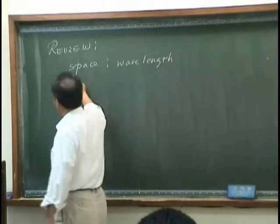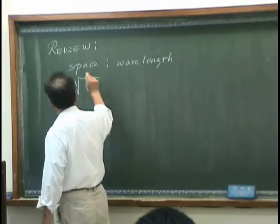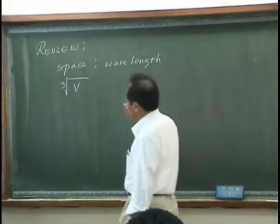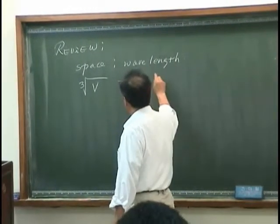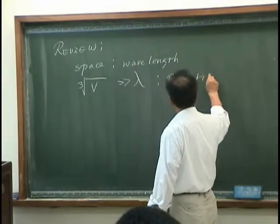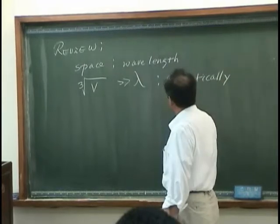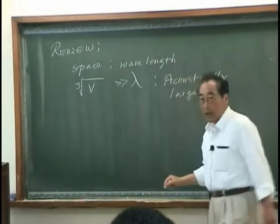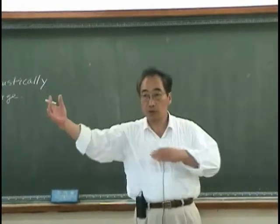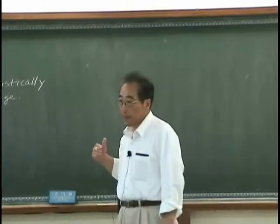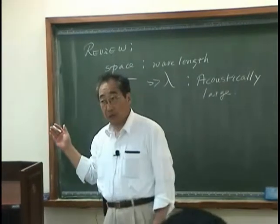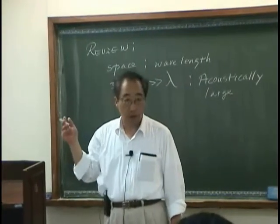For example, when we have certain space that has the volume V, and if that is much larger than wavelengths, we call that the space is acoustically large space. In this case, waves travel in the space along the distance that is very far, much longer than the wavelengths.